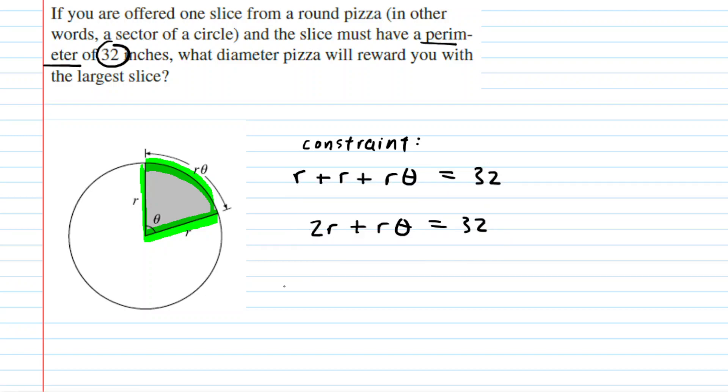Another equation you need for optimization is known as your objective. The objective is based on whatever it is you're trying to either maximize or minimize. In this case, we are trying to reward ourselves with the largest slice.